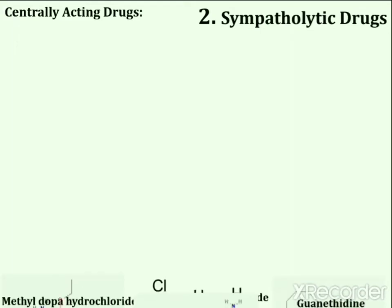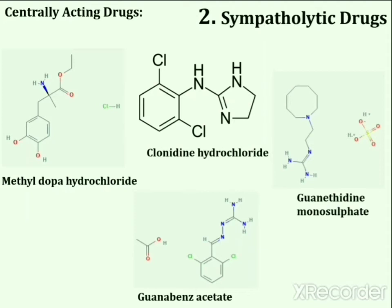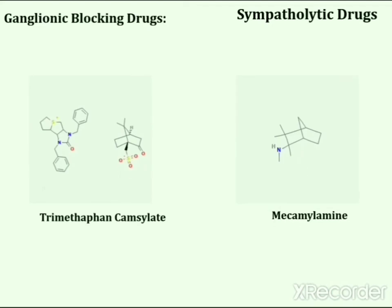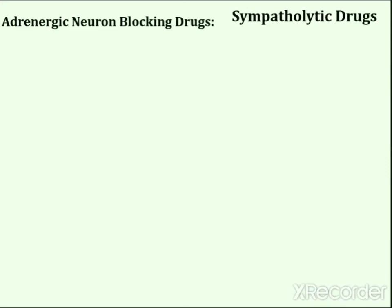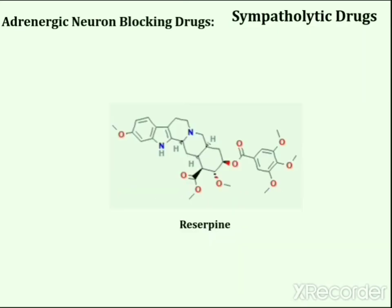The second main category is sympatholytic drugs. The first subcategory includes centrally acting drugs such as methyldopa hydrochloride, clonidine hydrochloride, guanabenz acetate, and guanethidine monosulphate. The second subcategory includes ganglionic blocking agents such as trimethaphan camsylate and mecamylamine. The next subcategory includes adrenergic neuron blocking drugs, of which reserpine is an important example.